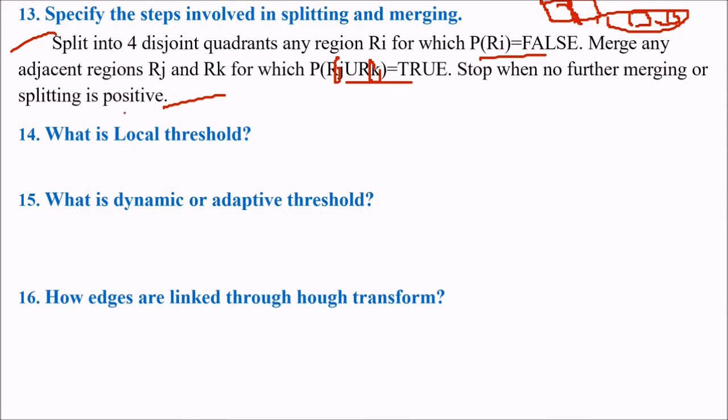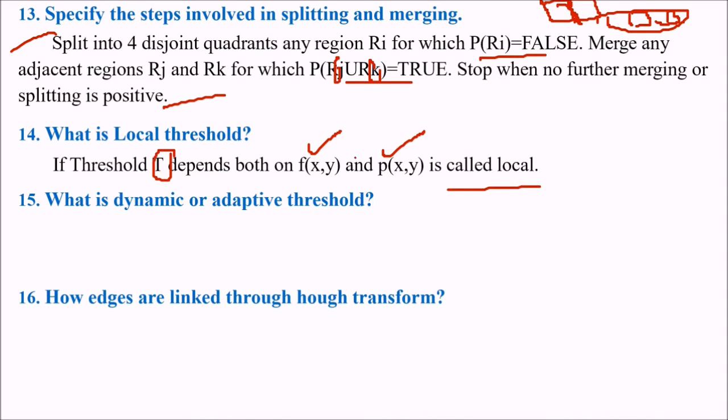What is local threshold? If threshold T depends both on F(X,Y) and P(X,Y), this is called local. As we saw that the threshold is only depending on the image, but here we have the other value also in the local threshold.